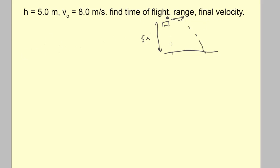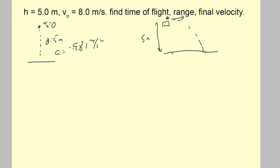For the time, we think vertically — just a falling body. The initial vertical velocity was zero because all of the initial velocity was horizontal. Vertically, the initial velocity is zero, and it fell 5 meters. Acceleration of gravity is -9.81 m/s². Since everything is going down, we could make both values positive.